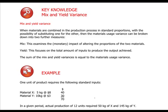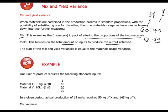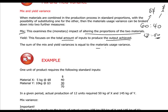In terms of mix and yield variances, this applies when you are combining more than one material in the production process. Mix variance examines the monetary impact of altering the proportion of two materials — for example, if the budget says 60 to 40 but you use 50 to 50, what is the cost impact? If one material is more expensive, using less of it generates a favourable variance. Yield variance focuses on the total amount of inputs required for the output achieved. The sum of these two variances equals the total materials usage variance.